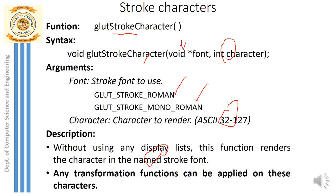Since stroke characters are displayed using basic geometric primitives, we can also apply basic transformations such as rotation. I can orient the line about a specific angle. So transformations can be applied to stroke characters, and that is how we can display all alphabets in OpenGL.